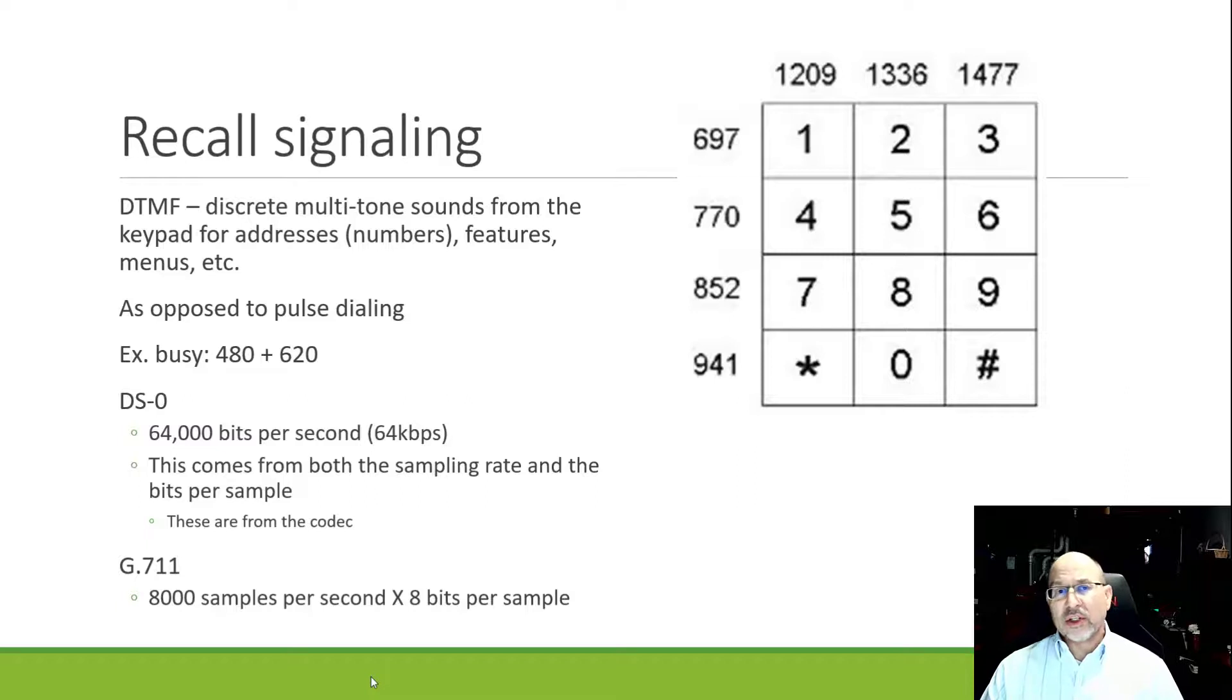All of the sounds that are generated on that phone are also in that range of frequencies. The busy signal for example is 480 and 620 Hertz put together. Everything is based around this range of frequencies. Even dial-up modems have a carrier wave inside that set of frequencies.